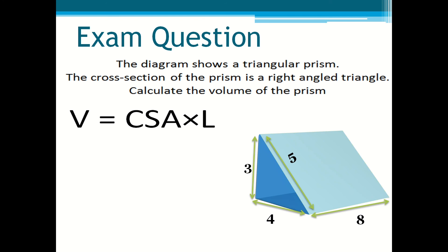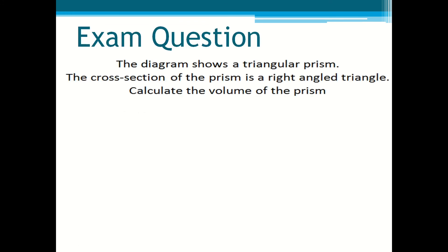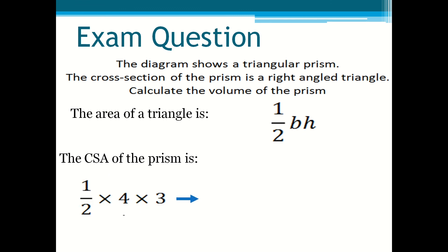You first state the formula which is volume equals cross sectional area times by length. First calculate the cross-sectional area. Using the formula of a half times base times height, the cross-sectional area is a half times four times three which is equal to six centimeters squared.